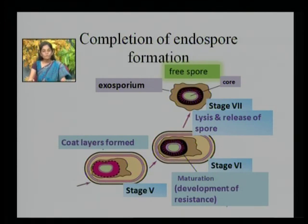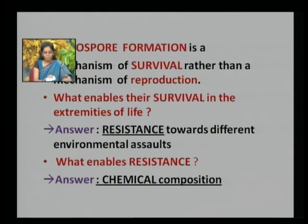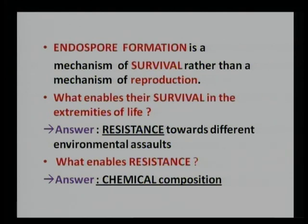Ultimately, the mature spore is released by lysis of the mother cell as a free spore. This spore is highly dormant, dehydrated, resistant, and refractile in nature. We can therefore say that endospore formation is a mechanism of survival rather than a mechanism of reproduction.